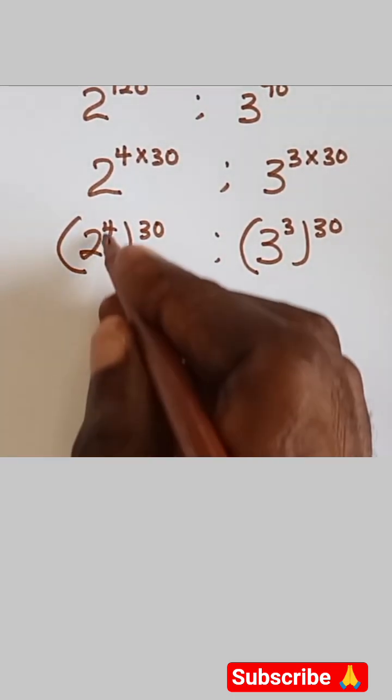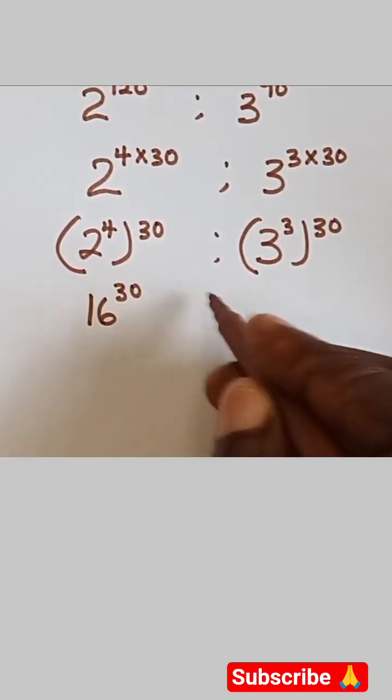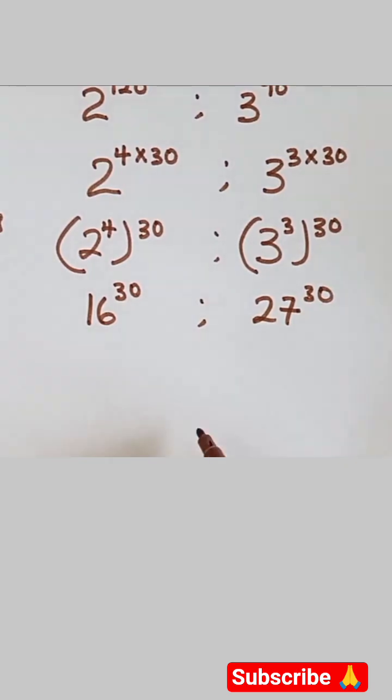We know what 2 raised power 4 is, that's 16. This gives 16 raised power 30, and we have 3 raised power 3, so this gives 27 raised power 30.